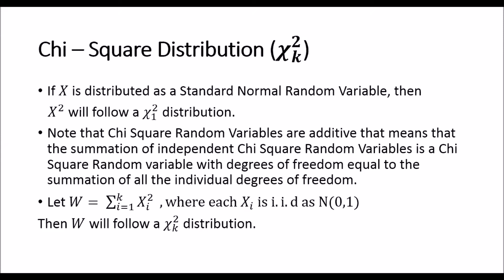This symbol is the Greek letter chi, and this distribution is called the chi-square distribution with k degrees of freedom. This is the only parameter this distribution takes — k, the degrees of freedom. If a random variable x is distributed as a standard normal random variable with mean 0 and variance 1, then x-squared will follow a chi-square distribution with 1 degree of freedom.